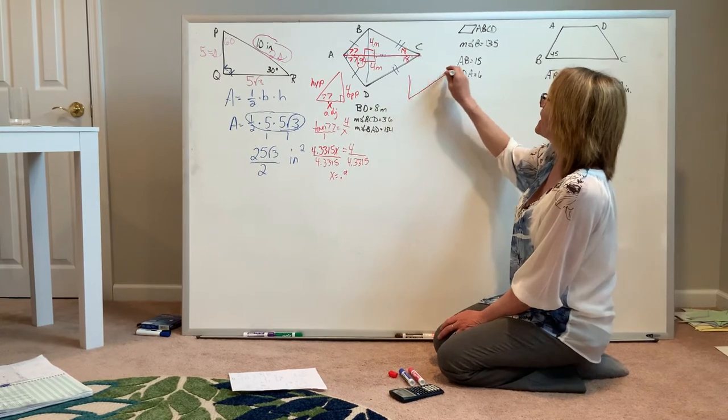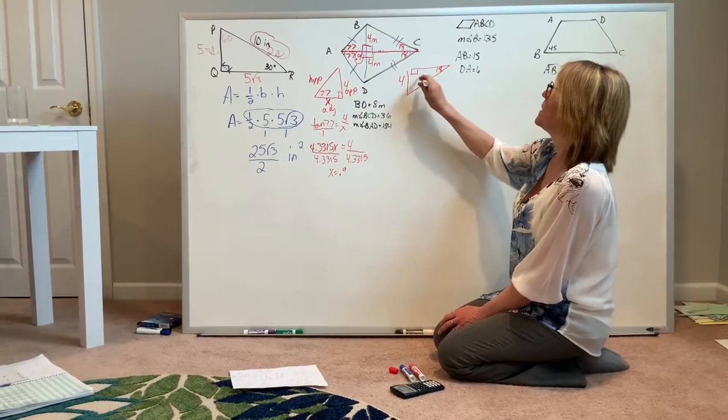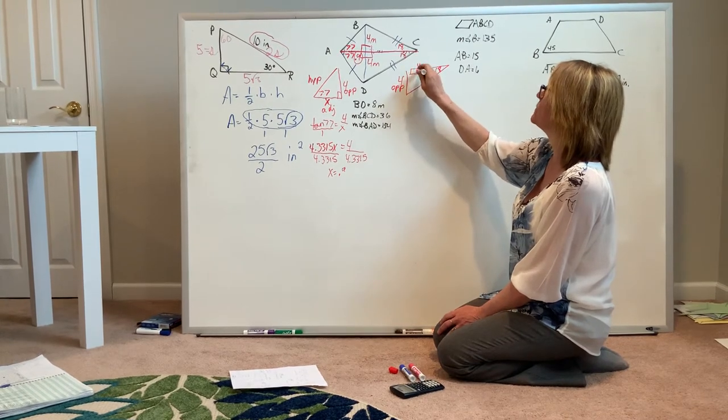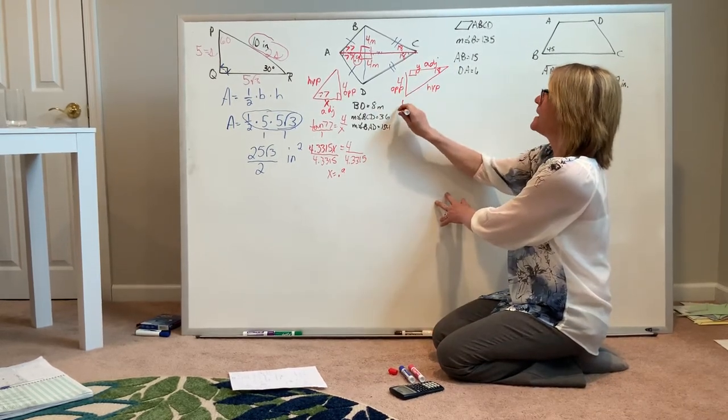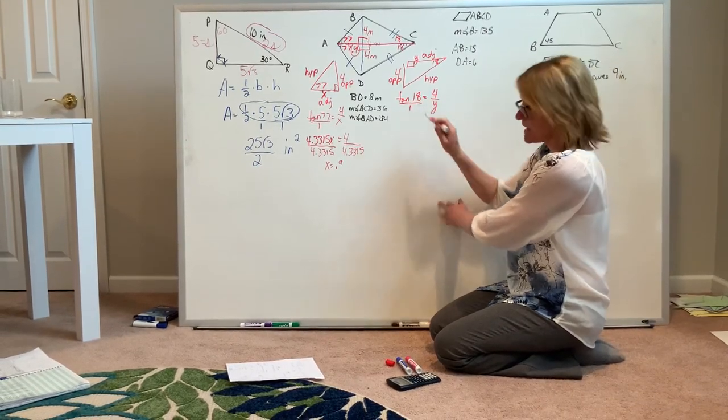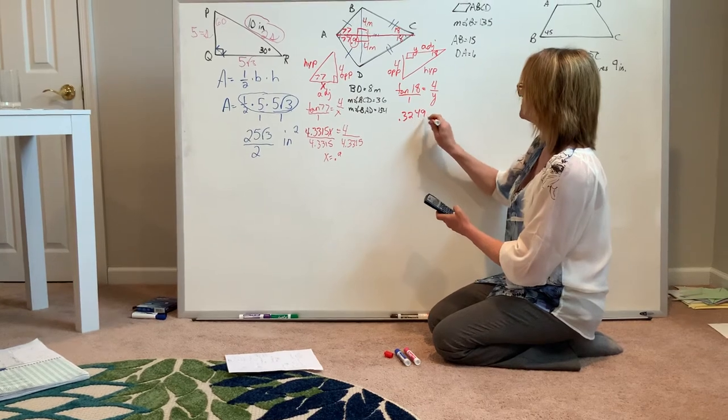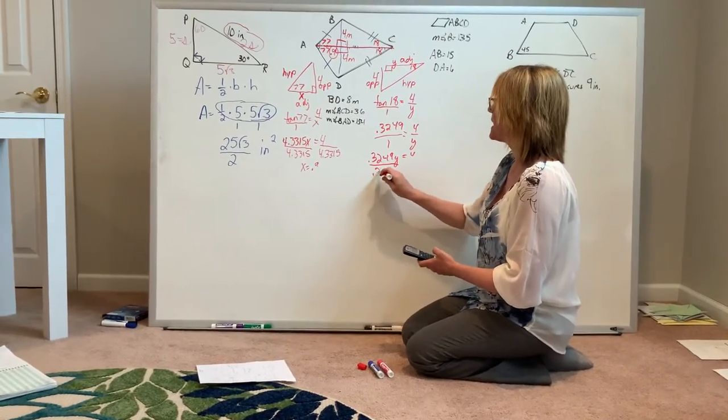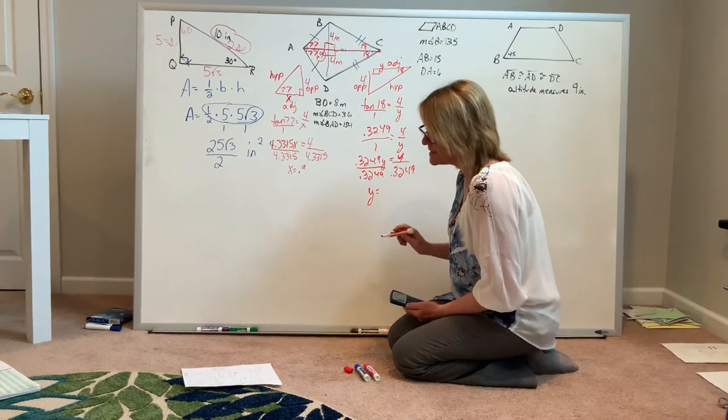I'm going to come back here and look at my second right triangle. I still have a leg with the length of 4, now I have an 18 degree angle. I have an unknown leg that I'm going to call y, and that would be the leg adjacent to the 18 degree angle. Adjacent and opposite together tells me I need to set up a tangent equation. Tangent of 18 equals 0.3249. My cross products give me 0.3249y equals 4, and to find y, I divide to get 12.3.